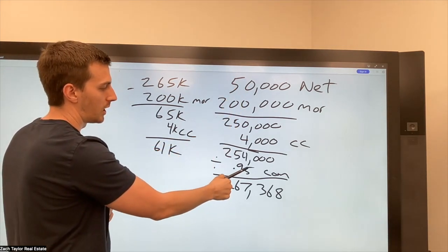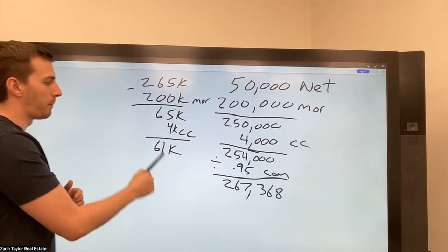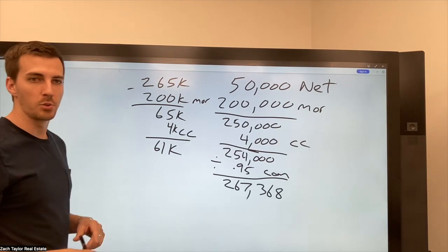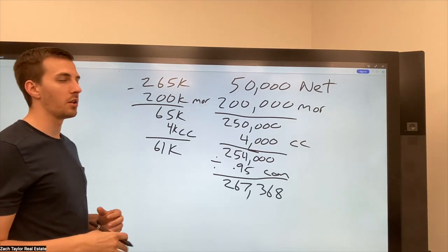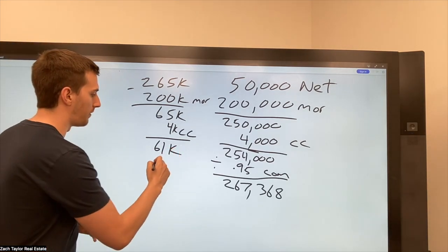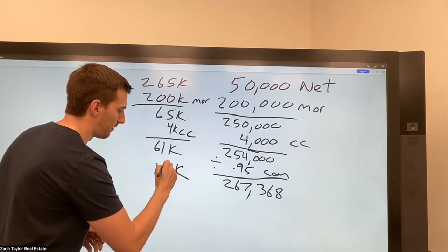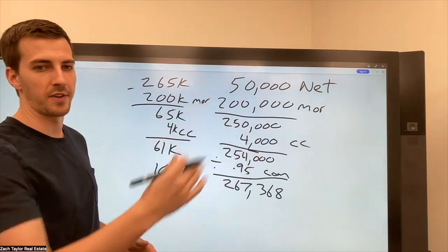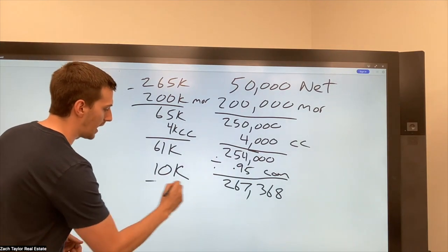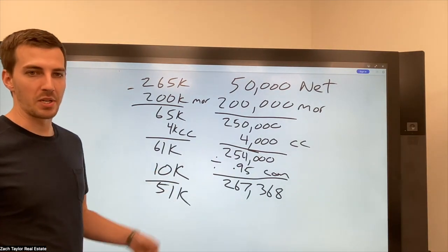So I could do a flat fee. I could say, I'll list your house for a total of $10,000, a flat fee. I'll keep 5,000. I'll give 5,000 to a buyer's agent. Well, now they net 51 and everybody's happy.